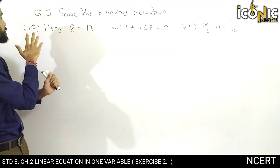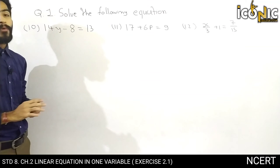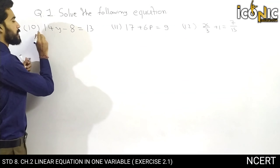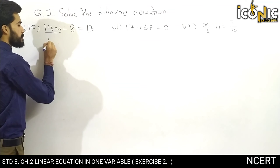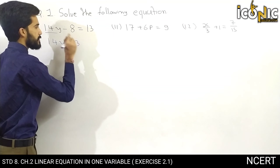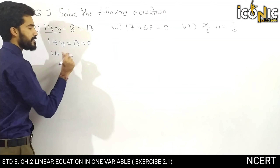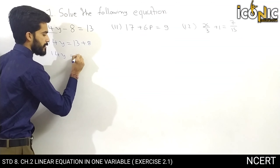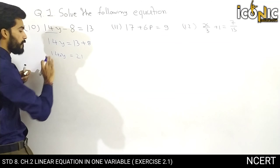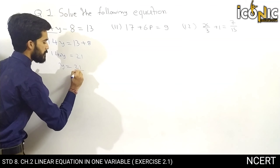This is the 10th example, in which 14y minus 8 is equal to 13. We want the answer for y. We move all numbers to the right side, so 14y is equal to 13 plus 8, which equals 21. Since 14 is multiplied by y, it goes to division: y is equal to 21 by 14.